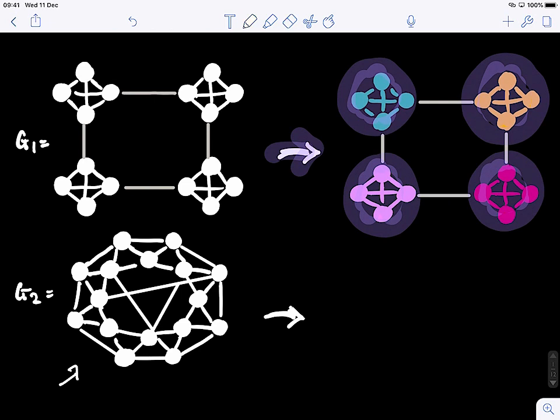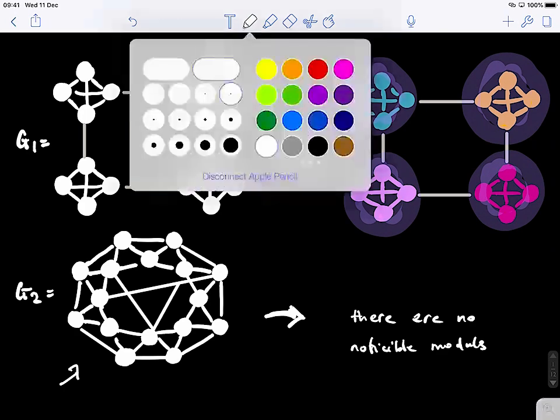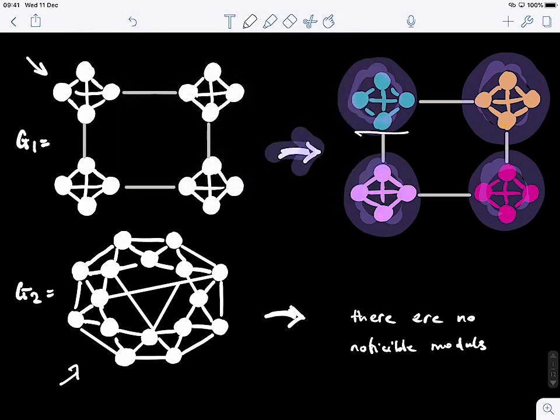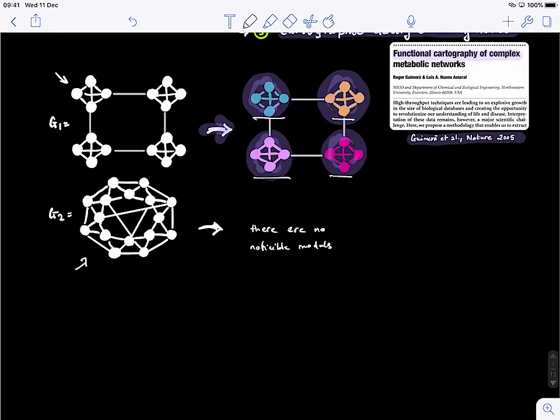So in this graph, it's not very clear if it has different modules or not. In this case, we say there are no noticeable modules. So basically, not all graphs are structured and have the modularity aspect, but in case the graph has different communities, we want to learn how to detect those communities. This is the problem we will look at today.